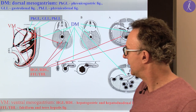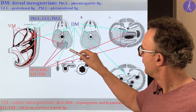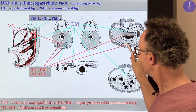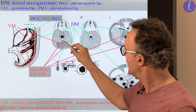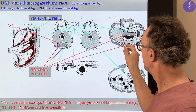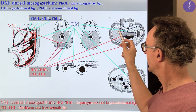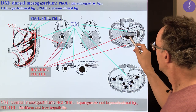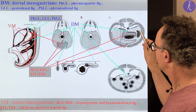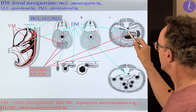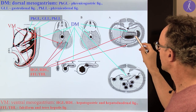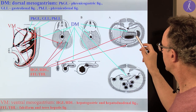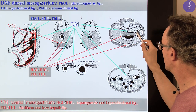With rotation, the situation changes. The falciform ligament, which is still quite anterior, and the hepatogastric ligament rotates into a new position. The liver is already on the right side, not in the middle. The stomach has rotated and the spleen is on its left side. The dorsal mesogastrium with its two parts — the gastrosplenic and the phrenosplenic ligament — are seen here.